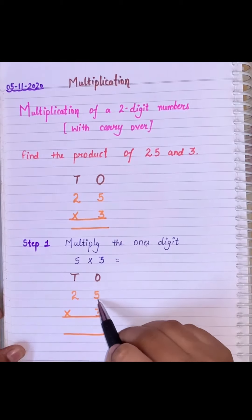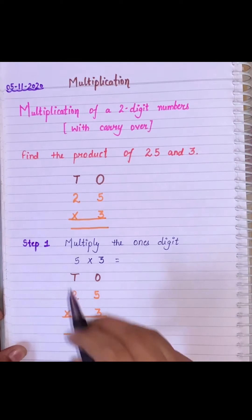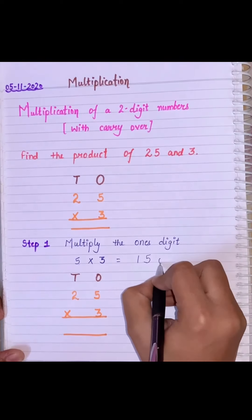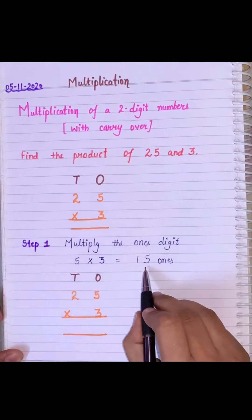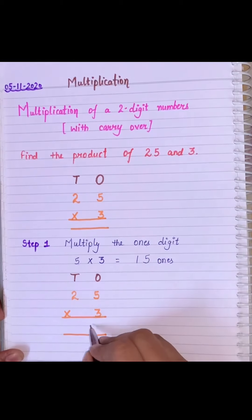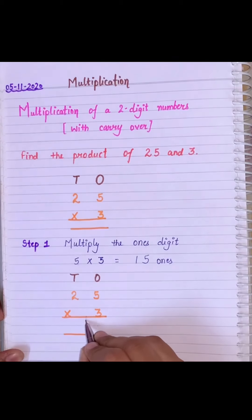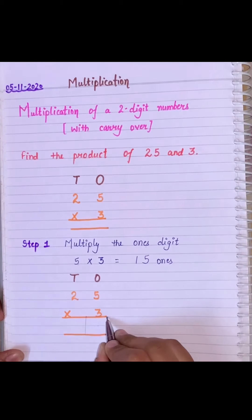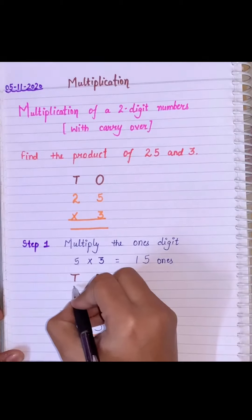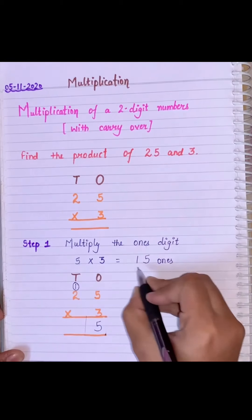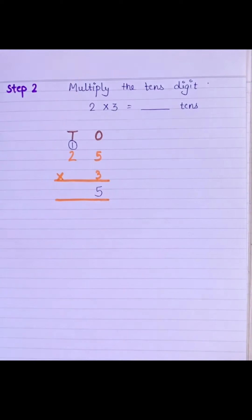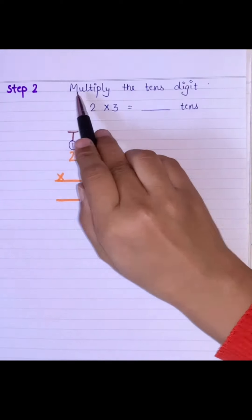Our first step will be to multiply the ones digit. As you can see, under the ones we have 5 and 3, so we will multiply 5 with 3 and we will get 15. Now we will write this 15 here, but remember we cannot write 15 in one column, so we will write 5 under the ones and we will write this 1 here under the tens column.